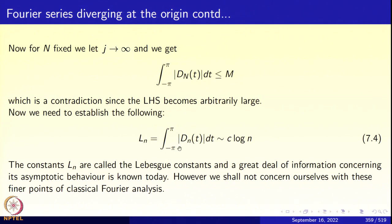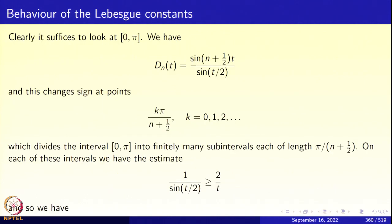We call the integrals Lₙ = ∫₋π^π |Dₙ(t)| dt the Lebesgue constants. A great deal is known about the Lebesgue constants and the literature is quite vast, but we shall not concern ourselves with all those fine points of Fourier analysis. Now let us look at the behavior of the Lebesgue constants.